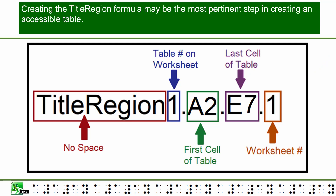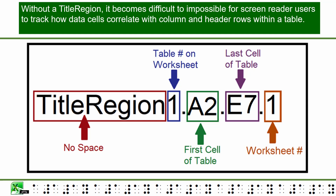Creating the title region formula may be the most pertinent step in creating an accessible table. Without a title region, it becomes difficult to impossible for screen reader users to track how data cells correlate with column and row headers within a table.